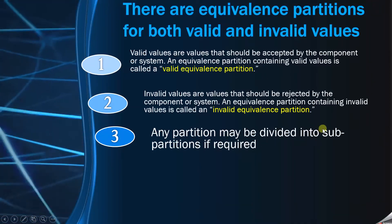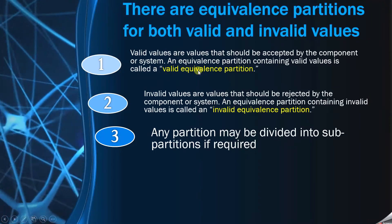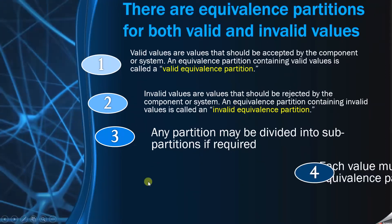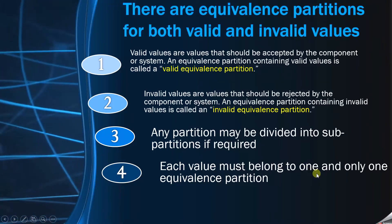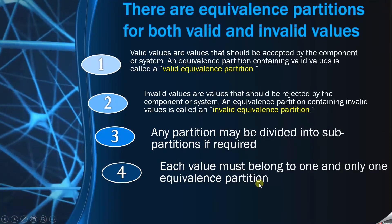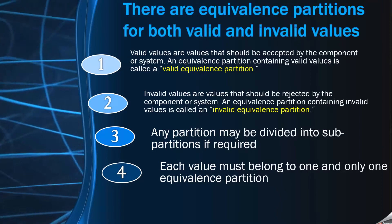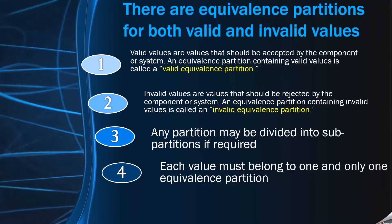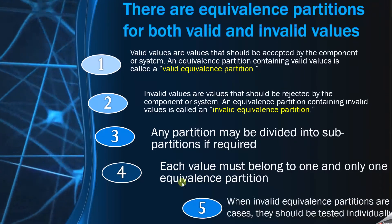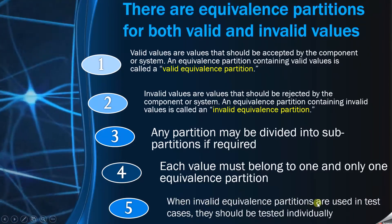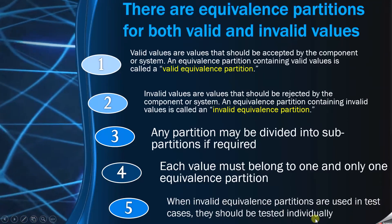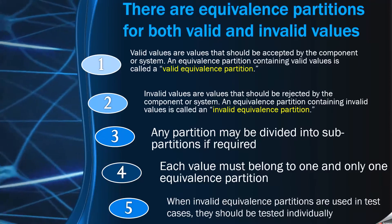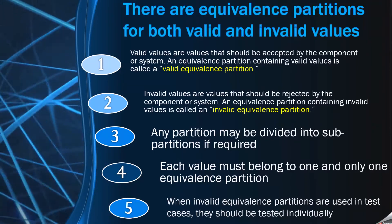Any partition may be divided into sub-partitions if required. So if you have a valid partition, you can further divide it, and that will be called a sub-partition. Similarly for invalid values as well. The fourth point is: each value must belong to one and only one equivalence partition. When writing test cases and selecting data, since you have already divided between valid and invalid partitions, you need to select only one data from one partition. Also, when invalid equivalence partitions are used in test cases, they should be tested individually. If there are three or four different invalid classes, you have to select data from each individual class.